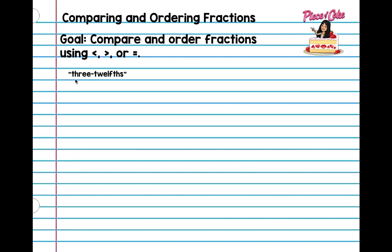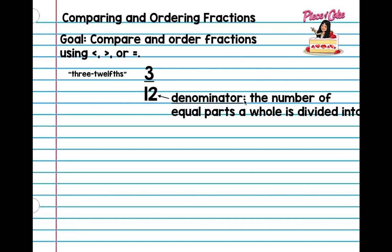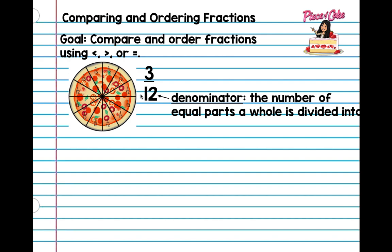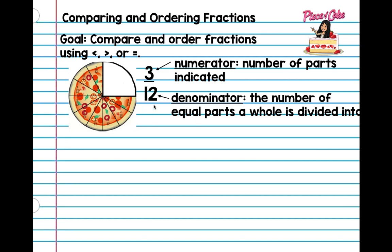Here we have the word form of three twelfths. Let's break down our fraction and label the parts. As you guys remember from grade five, this is the denominator — the number of equal parts a whole is divided into. So if I have a pizza and I break it into twelve, my denominator would be twelve. The top number we call the numerator — it's the number of parts indicated. So if I ate three of these, I would have eaten three twelfths, and what's left is nine twelfths.